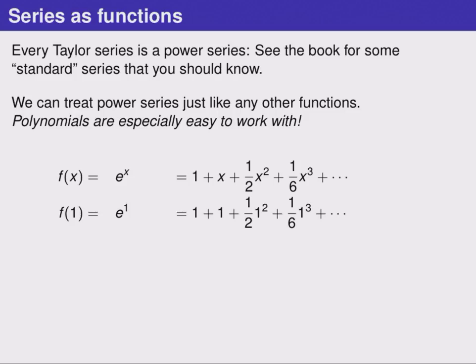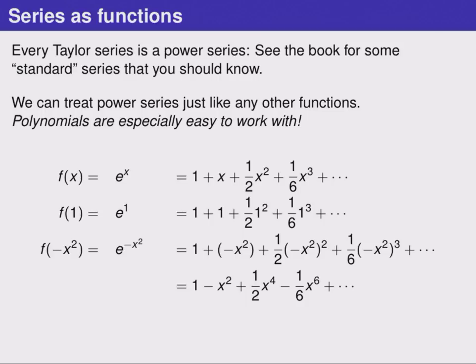We can do more however. For example, what if we wanted to know what e to the negative x squared is? We can substitute negative x squared into our formula for e to the x, and by substituting that into the polynomial on the right we get another polynomial. Make sure you understand where all of the negative x squareds came from in the right here. Simplifying a little we get another nice looking polynomial that is another way to represent the function e to the negative x squared.